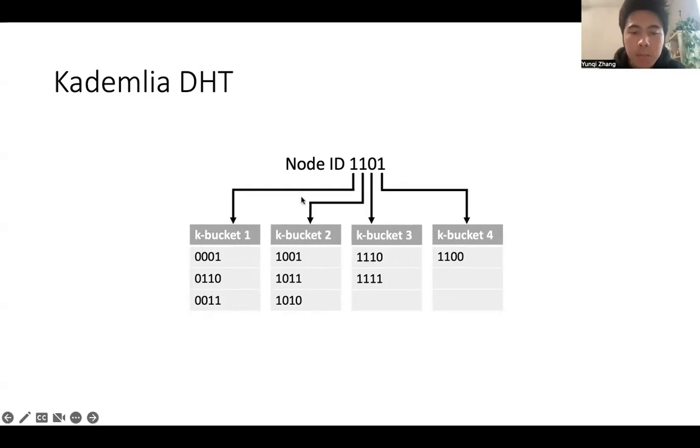For the second K-bucket, we store peers with node ID starting from 10. Similarly, for the third K-bucket, we store nodes with node ID starting from 111. And for the last K-bucket, we store peers with node ID 1100.